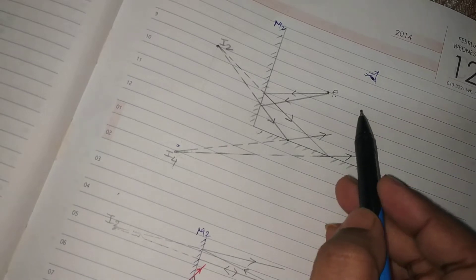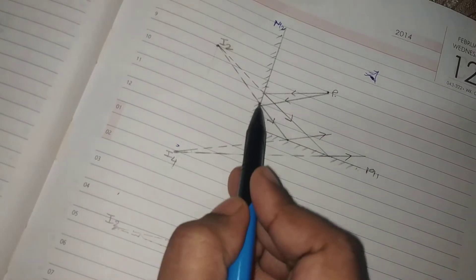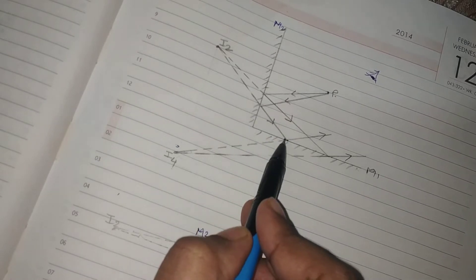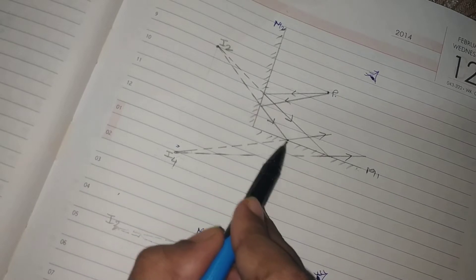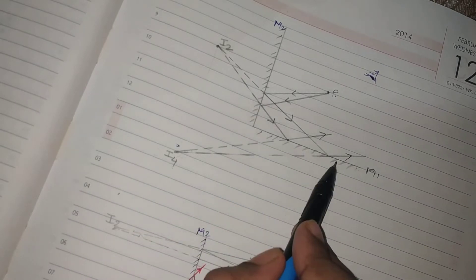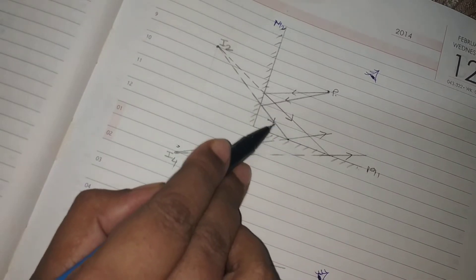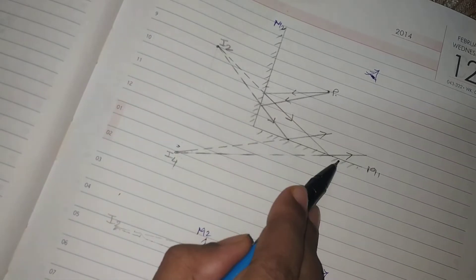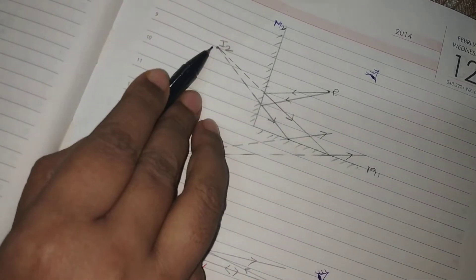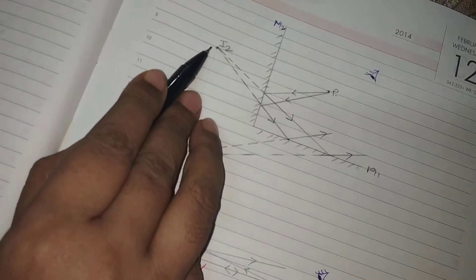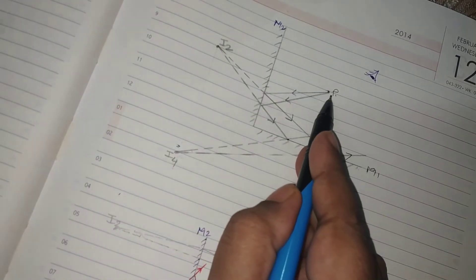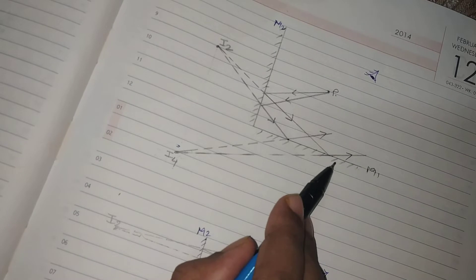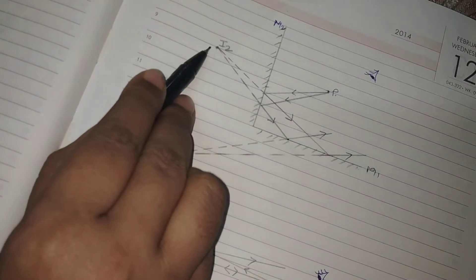Here you can see that the rays from the object P are first falling on the mirror M2, and after reflection they strike the mirror M1. So for M1, it will appear that these reflected rays are actually coming from I2. So M1 will think that I2 is the object, but I2 is the image of the point object P. But for M2, I2 is the object because it appears that these two rays are coming from here.